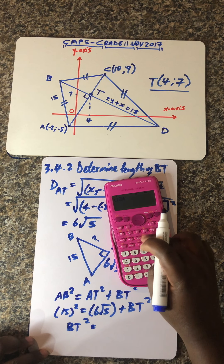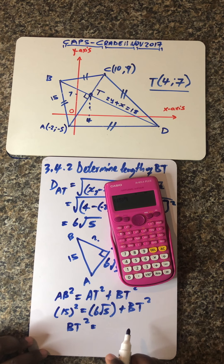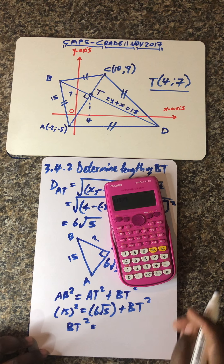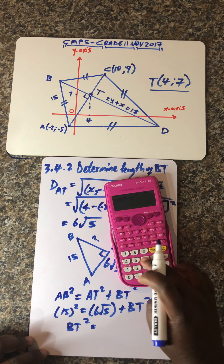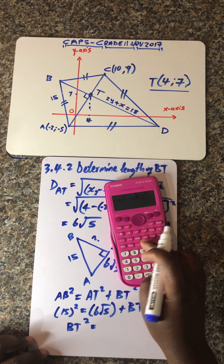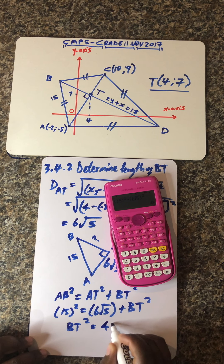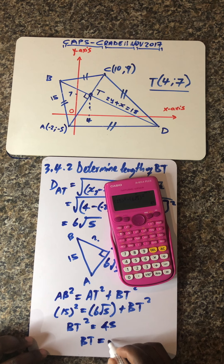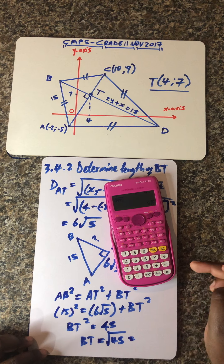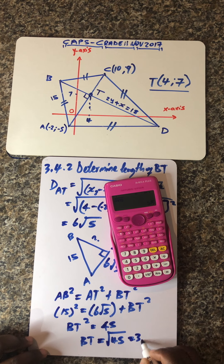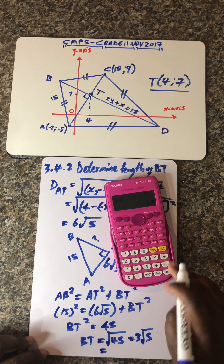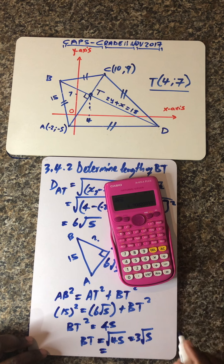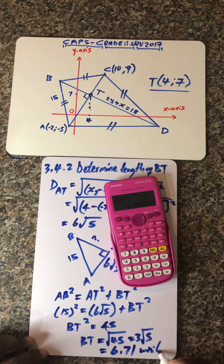We move (6√5)² to the left side, so BT² = 15² − (6√5)². Punch that on the calculator: 15 squared minus (6√5) squared, and you get 45. So BT = √45 = 3√5, which in decimal form is 6.71 units.